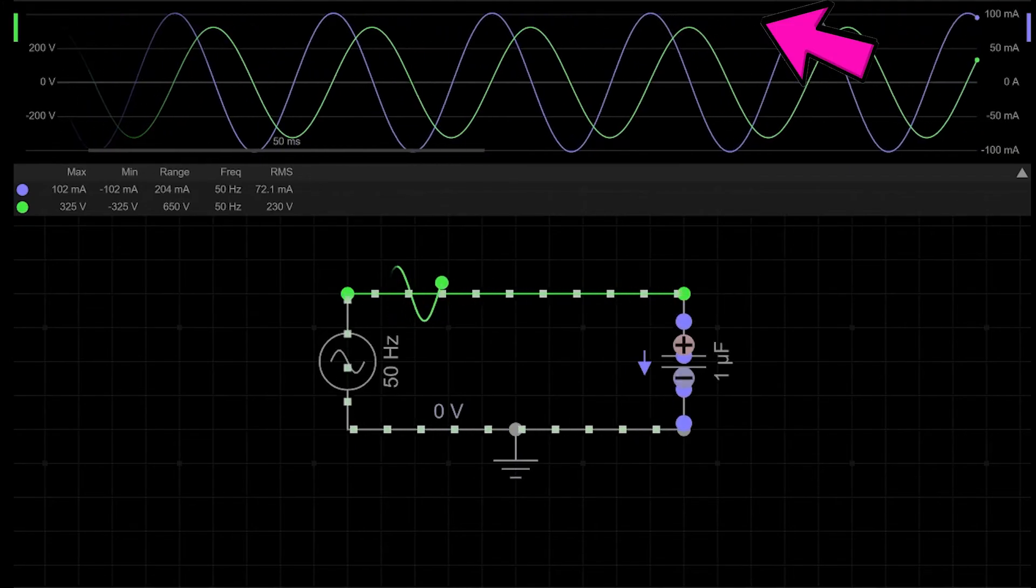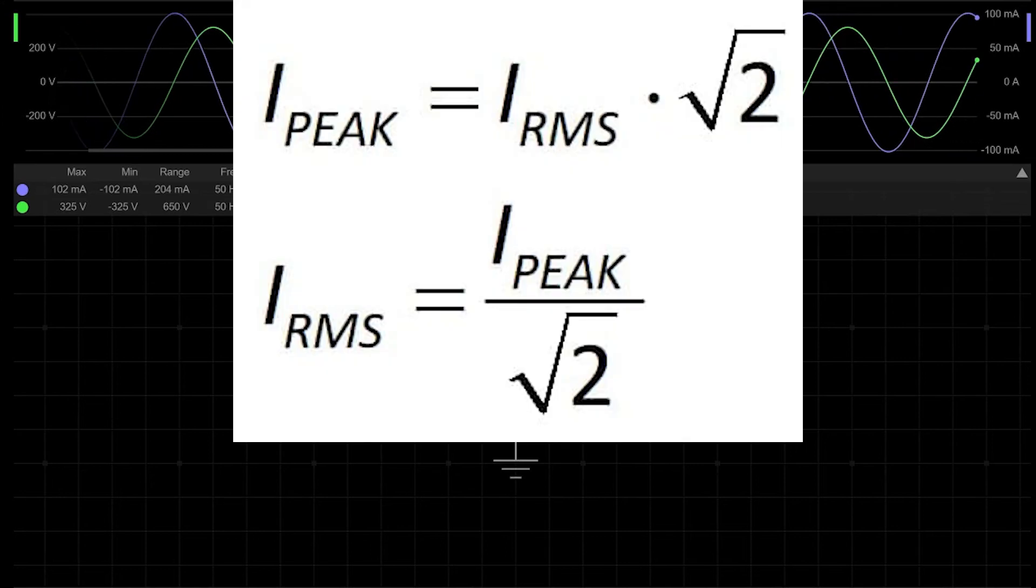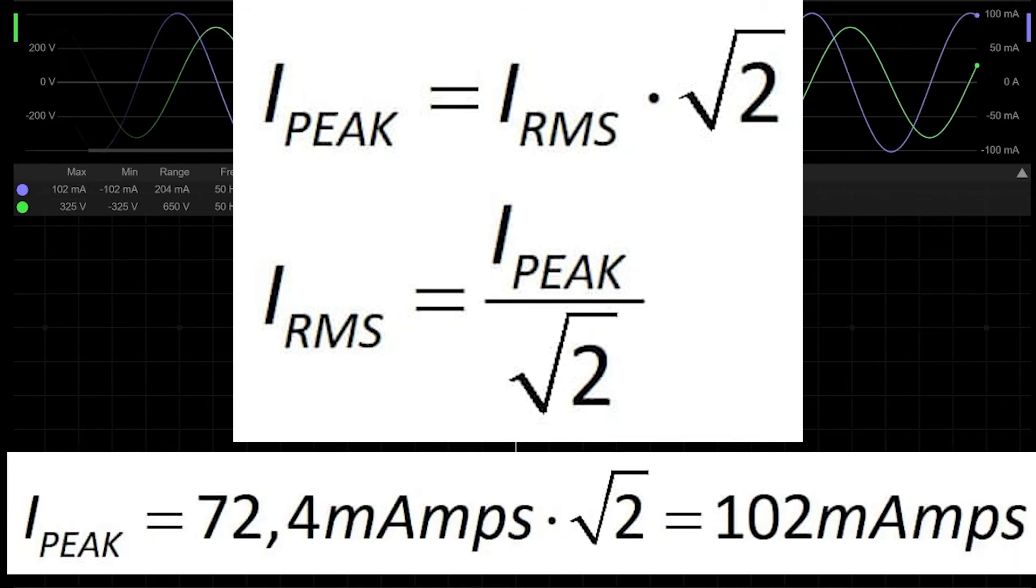But wait, if 230V isn't the maximum, what is the maximum then? To define a maximum or peak value of a sinusoidal signal, you need to multiply its RMS value by the square root of 2. And vice versa, to define average, divide peak value by square root of 2. That means that maximum current in the circuit will be equal to 102 milliamps.